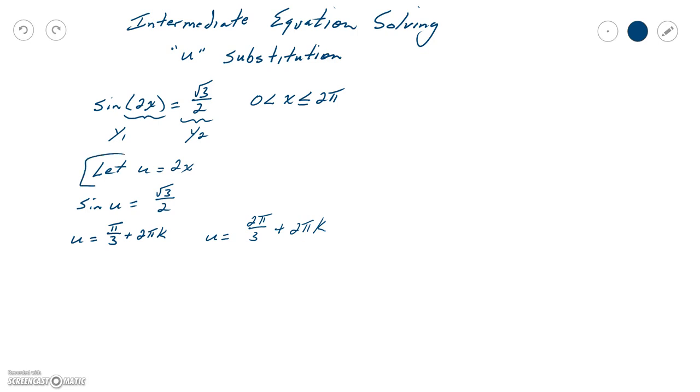All right, let's resubstitute our u equals 2x. So now I have 2x equals π over 3 plus 2πk, and 2x equals 2π over 3 plus 2πk. And now we've got to solve this for x. We can divide everything by 2, or it might be easier to see if we just multiply by 1 half. So if I distribute the 1 half through, that gives me π over 6 plus πk. 1 half times π over 3 is π over 6. 1 half times 2πk is just πk.